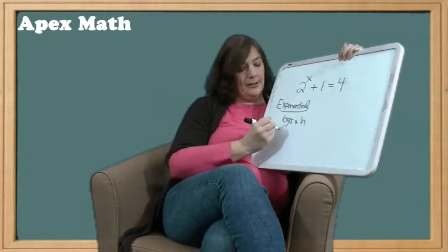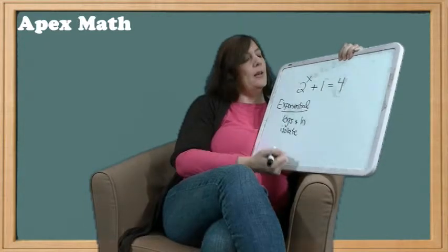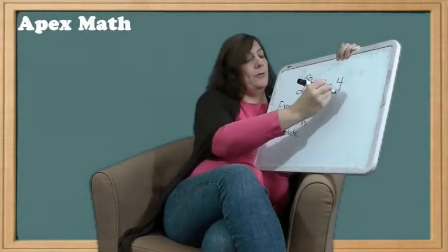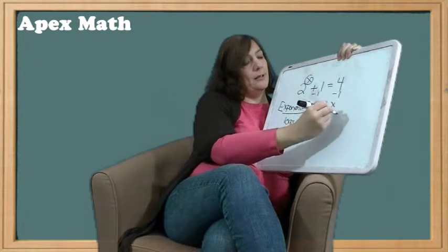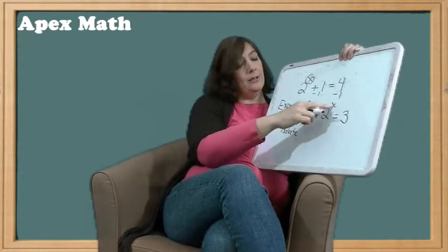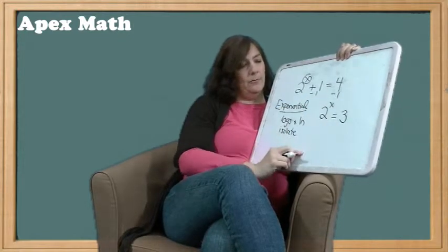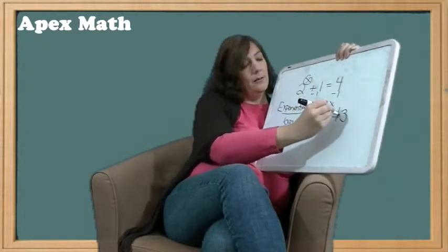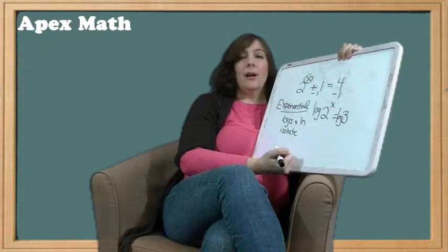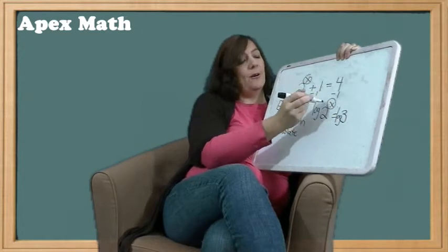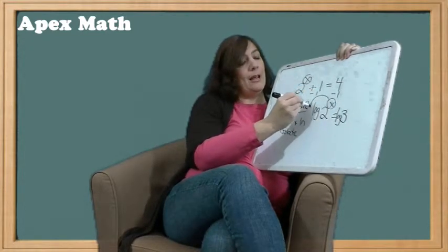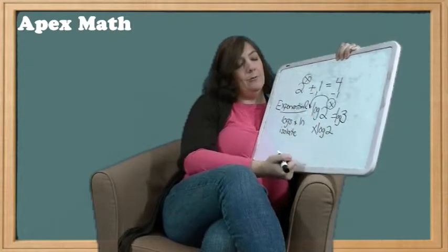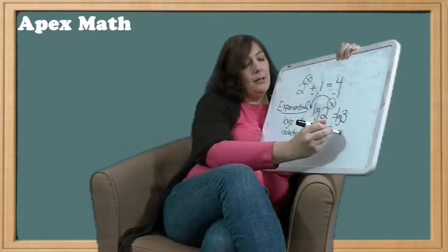So we first need to isolate our variable. Our variable is here. It's attached to the 2. So to isolate it, I'm going to have to subtract 1 from both sides. So I get 2 to the x is equal to 3. Now, since all I have is the variable with the 2 here, 2 to the x, I'm going to take the log of both sides. And the reason I took the log of both sides is the log property allows me to get the x from up in that exponent position and bring it down and put it in front of the word log. So now it is no longer in the exponent position. So now I can rewrite it as x log 2 equals log 3.